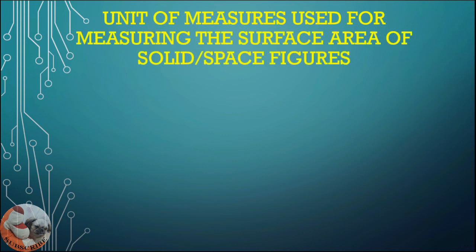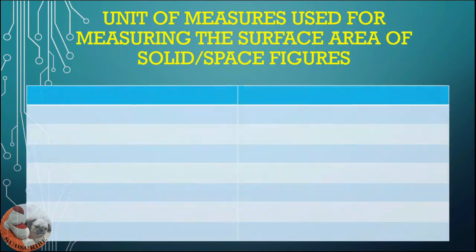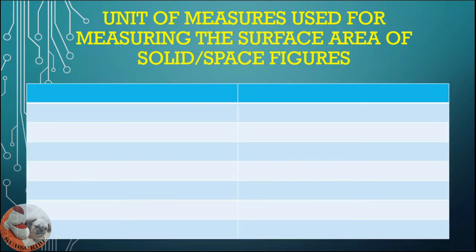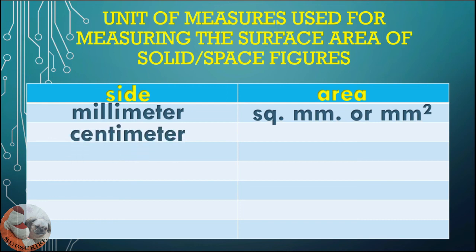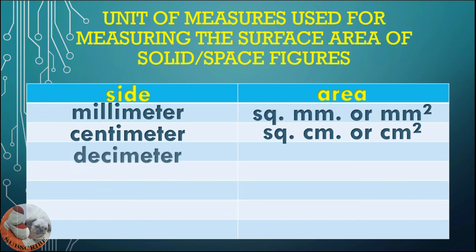These are the units of measure used for measuring the surface area of solid or space figures. If the side is in millimeters, the area is square millimeters. If the side is in centimeters, the area is square centimeters.